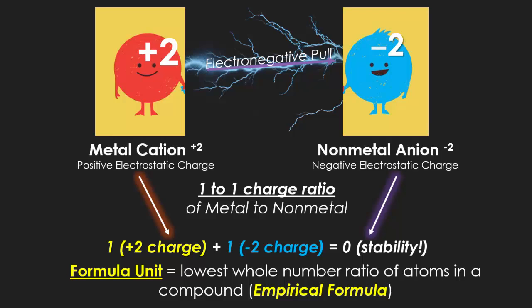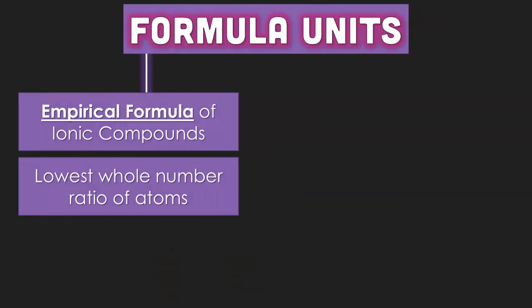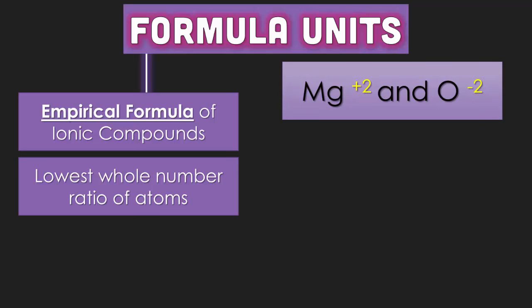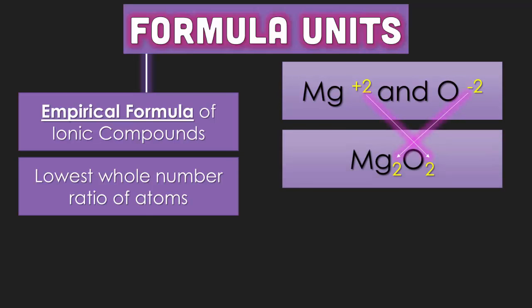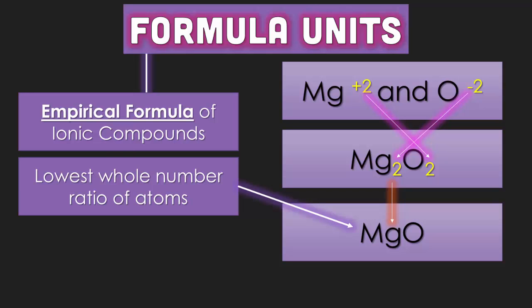We call these formula units when we get their ratios in the lowest whole number of the atoms involved. This is also called the empirical formula. An empirical formula, known as a formula unit for ionic compounds, is the lowest whole number ratio of the atoms. So when magnesium has a positive two charge and oxygen has a negative two charge, they could technically be two to two, but you reduce that ratio to a one-to-one ratio. If both numbers are even, you can most likely simplify them into a formula unit.